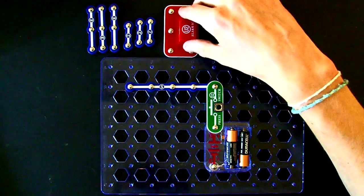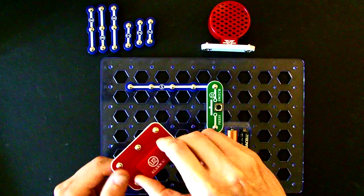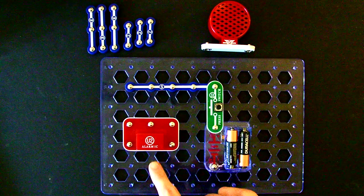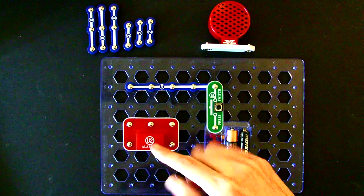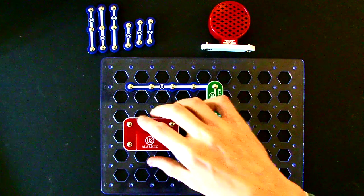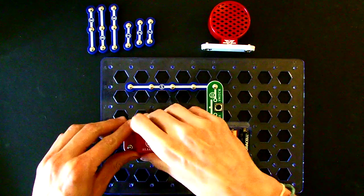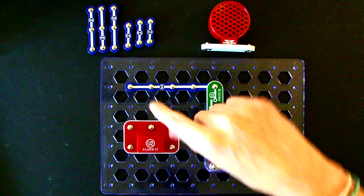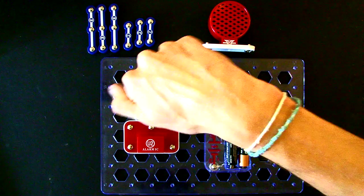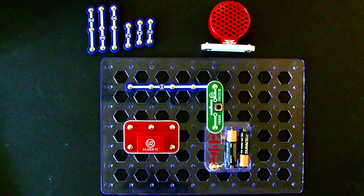Now, what this lesson is all about is this piece here. This is our alarm integrated circuit. It's basically a really complicated circuit packed down into here. It's been simplified for us. It's really easy to use. So attach that to your grid one, two, three snaps away from this top rail. Excellent.